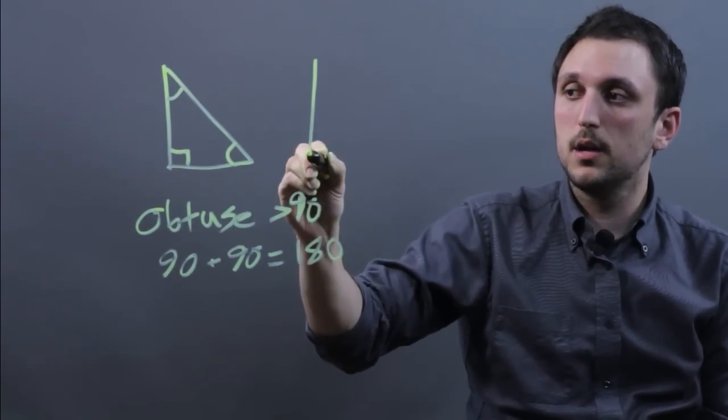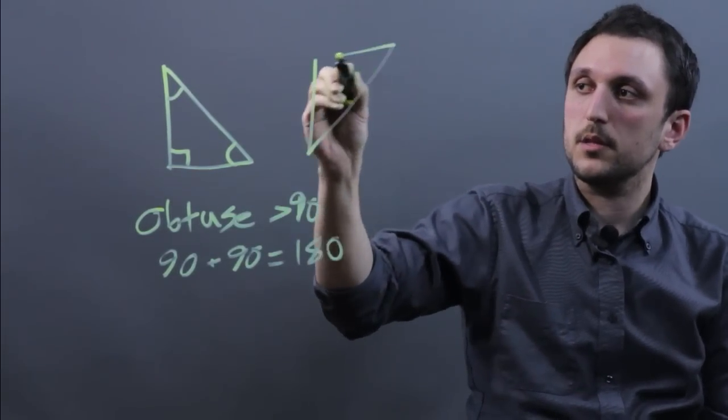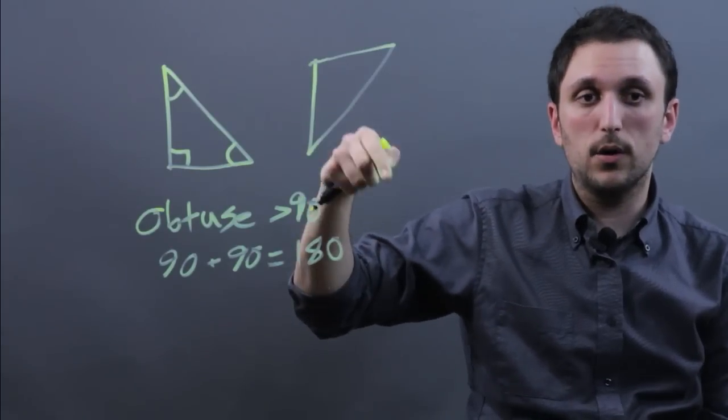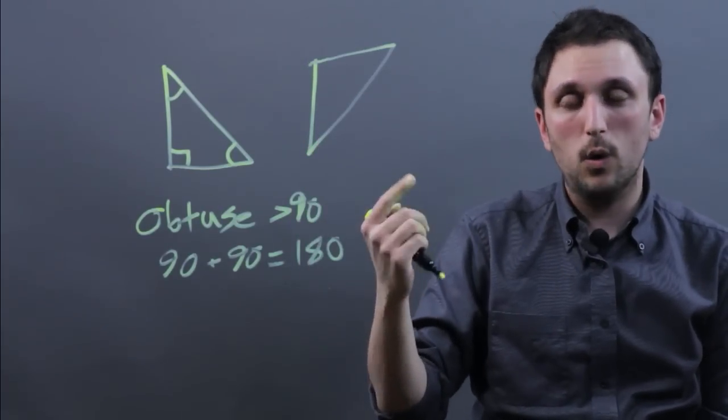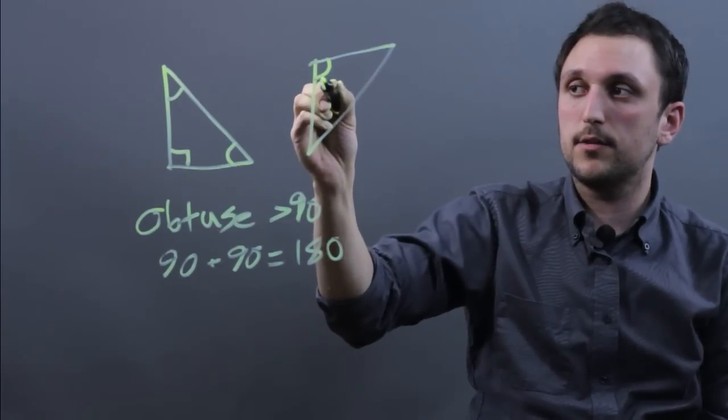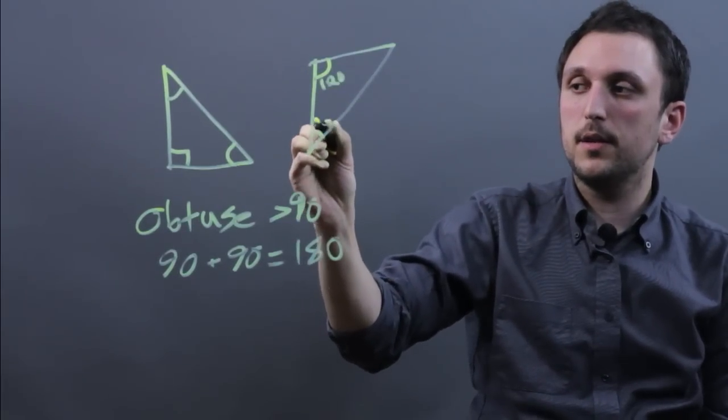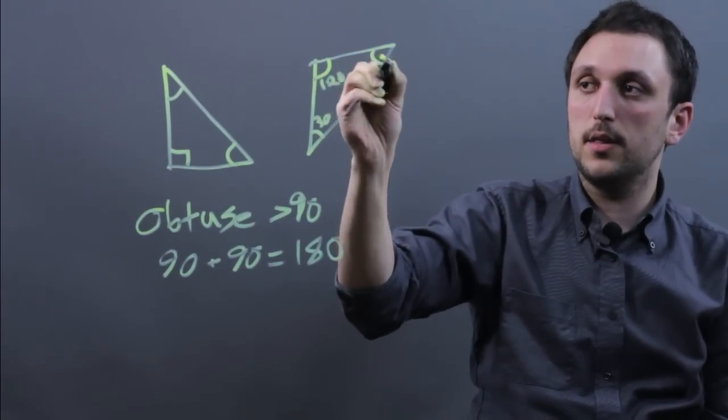So the answer for how many obtuse angles are in an obtuse triangle is one. Right here we could say this is 120 and then this would be 30 and this would be 30.